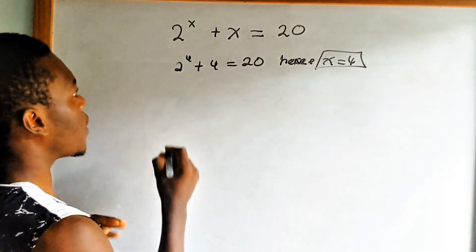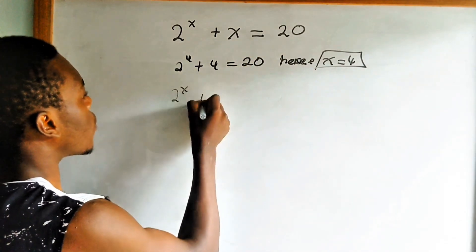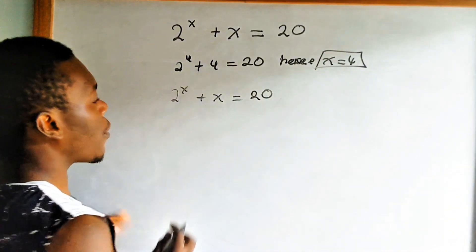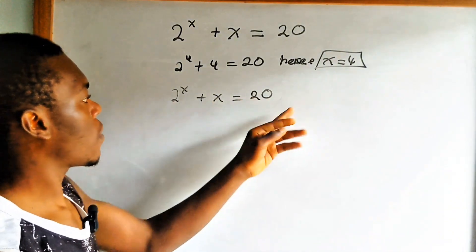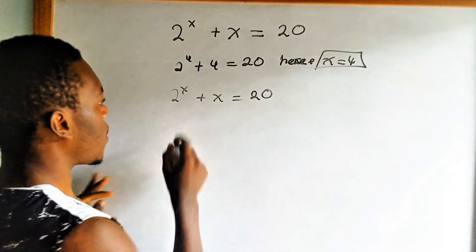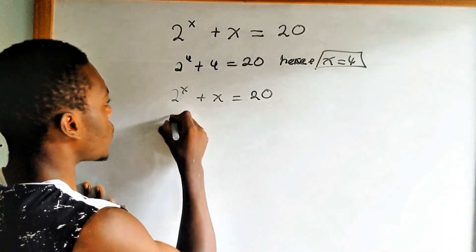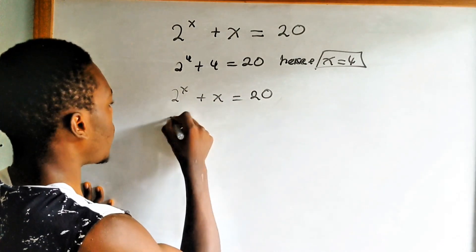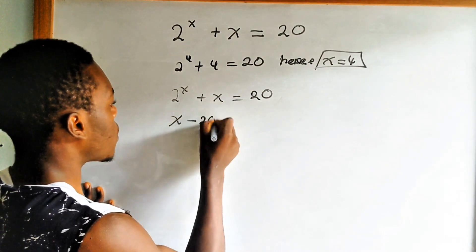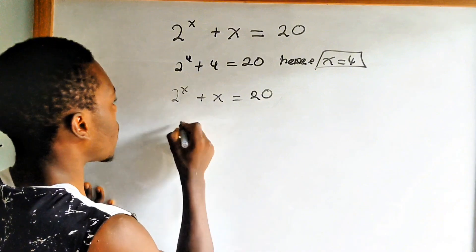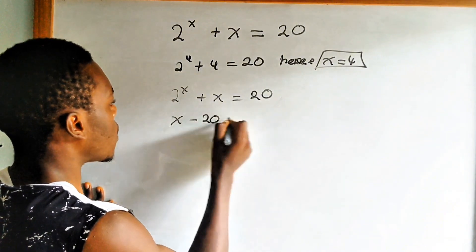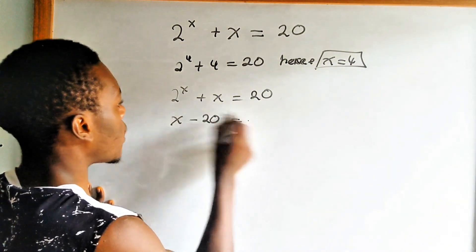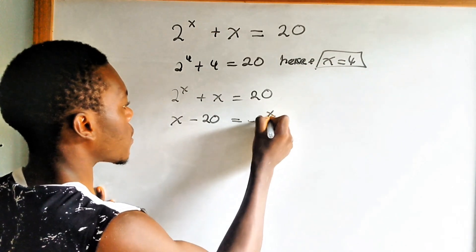The question is asking how are we going to solve it algebraically — let's do it together. We have 2 to the power x plus x is equals to 20. What I want to do is move x to the other side, so that would be 2 to the power x equals x minus 20, giving us x minus 20 is equals to negative 2 to the power x.